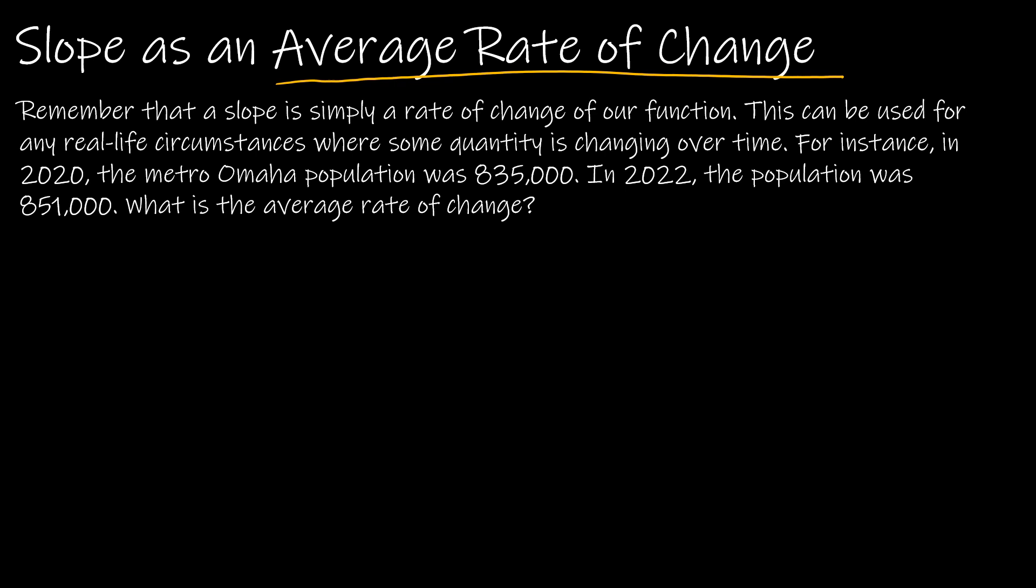Here's an example. If I'm looking at the Omaha population, the metro population was 835,000 in 2020. I'm just going to think about that as an ordered pair: 2020, 835. And in 2022, the population was 851,000. Now we want the average rate of change. How did I know to put 2020 and then 835 instead of 835, 2020? Because if I'm talking about the rate of change, I'm going to be talking about what is the change per year. That means a year has to be on the bottom or change in x. That's always going to be the case when you're dealing with something with time. How would I find the average rate of change? I would just find the slope.